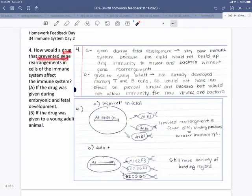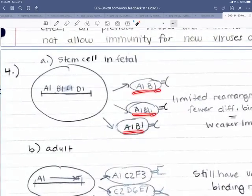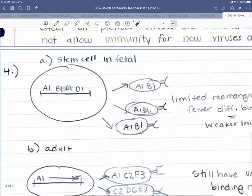How would a drug that prevented gene rearrangements in cells of the immune system affect it at two different times? If the drug was given during embryonic and fetal development or if the drug was given to a young adult animal? During embryonic and fetal development, that is the time when all of these rearrangements are happening of these receptors, these surface receptors on T and B cells. And so instead of getting a huge range of different receptors, we've prevented all those rearrangements. So we get very limited rearrangements. We might have all of them in this case be A1, B1, A1, B1, B1. And so we don't have the same variation.